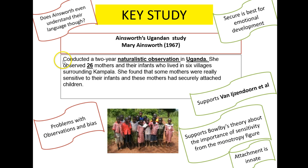Obviously there are problems with this research. Ainsworth went to Uganda but wasn't from Uganda, so it's quite difficult for somebody from a westernised part of the world — America or the UK — going to a non-westernised part of the world and observing them. Unless they had really good interpreters, sometimes you can't interpret everything properly, and if you haven't grown up in a particular culture, you don't understand some of their ways. So it could be open to all sorts of biases, and there are general problems with observations.